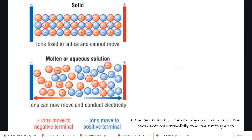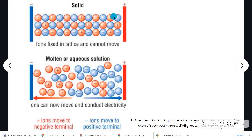As a solid, ionic substances do not conduct electricity. This is because the ions are held in that 3D lattice — in a fixed pattern — by those strong ionic bonds. Each cation is surrounded by anions, each anion is surrounded by cations, and they are held in place, so they aren't free to move throughout the solid.